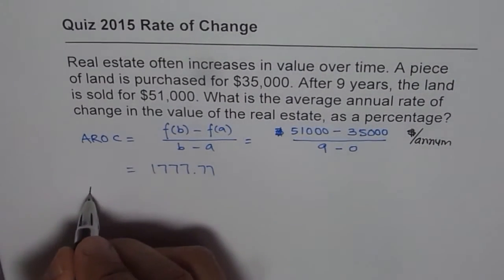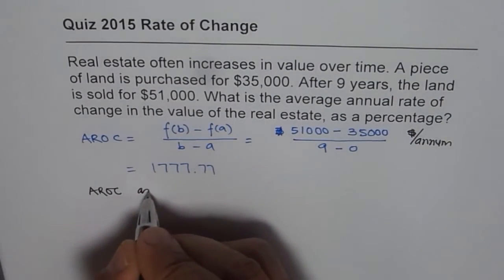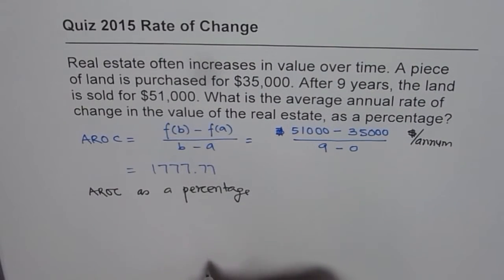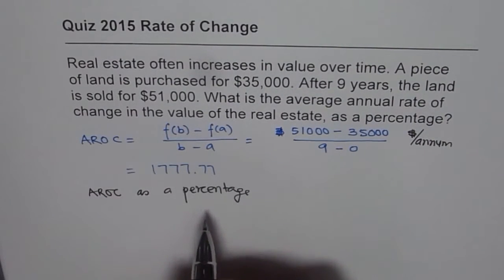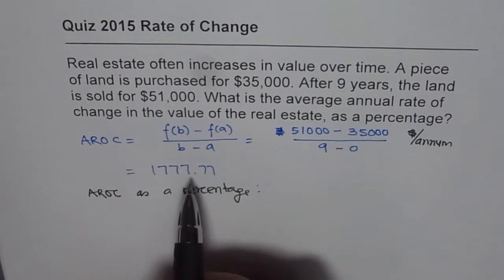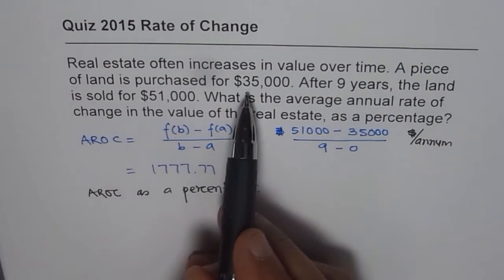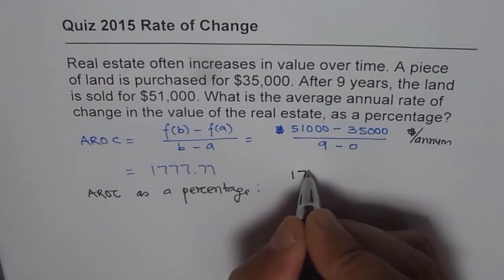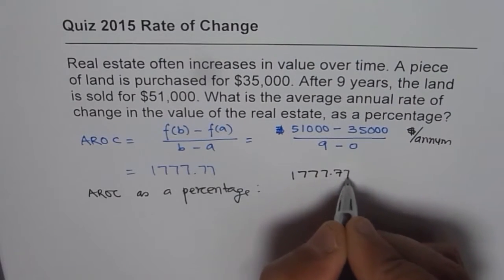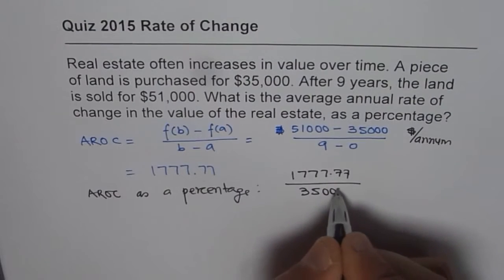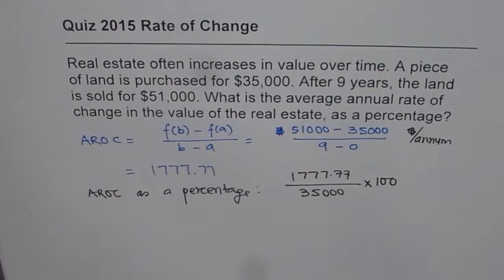Now, if you have to find average rate of change as a percentage, then what should you do? So, that is a critical part which at times you may miss. Whenever you are trying to find percentage, then you have to see with respect to starting value. So, it is that much average rate of change per annum. Now, as a percentage, you have to divide this by original value, 35,000, and then times it by 100 to get the answer.